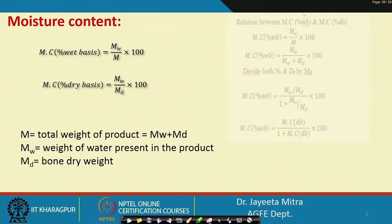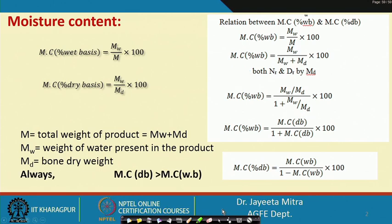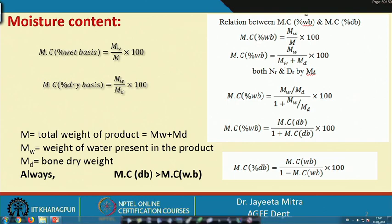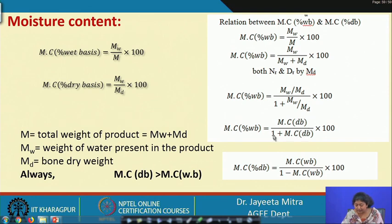We can convert from one form to the other. The relation between moisture content weight basis and moisture content dry basis: moisture content weight basis is Mw divided by capital M, and capital M can be written as Mw plus Md (dry matter). Dividing both numerator and denominator by dry weight gives Mw/Md divided by (1 + Mw/Md). So moisture content wet basis equals moisture content dry basis divided by (1 + moisture content dry basis), multiplied by 100.